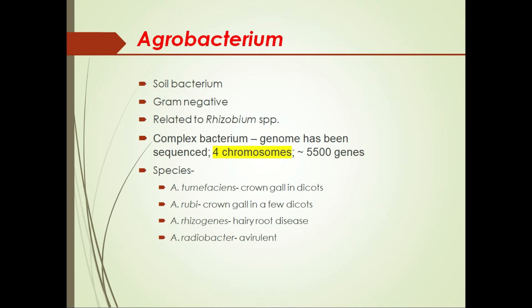Agrobacterium is a soil bacterium; it is gram-negative and related to Rhizobium. In the classification of plant pathogenic bacteria, Agrobacterium is now referred to as Rhizobium because they belong to the same class — based on 16S ribosomal RNA sequence comparisons, Agrobacterium and Rhizobium were found to be related. It is a complex bacterium whose genome has been completely sequenced; it has four chromosomes with about 5,500 genes, plus a Ti plasmid as extra-chromosomal DNA essential for pathogenicity.